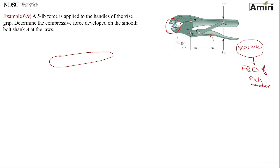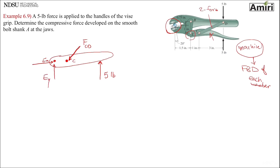It is a machine, which means we draw the FBD of each member. I'm going to draw the free body diagram of the lower handle. C is connected to a two-force member, so it's either compression or tension — let's call it force FCD. It is pushing on the pin, so it's a compression force. E is a pin, so I'll draw EX and EY. That's the FBD of the lower handle.